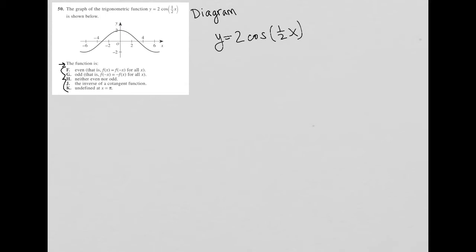I am going to start with choice F. So choice F says it's even, that is f of x equals f of negative x for all x. Well, we can test that. So let's try f of 4. Basically f of 4 should equal f of negative 4. Is that true? Well, f of 4 is here on the graph, f of negative 4 is here on the graph. So that's true. It does say for all x, so maybe I'm not satisfied with only choosing one x value.